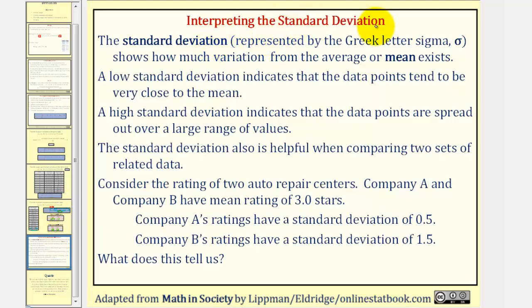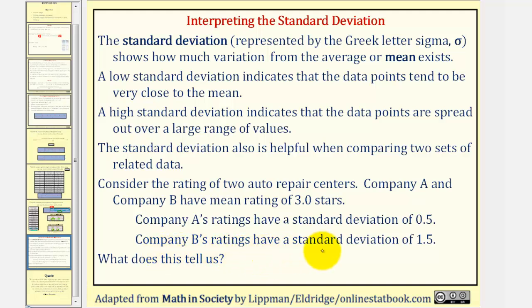Now let's interpret the standard deviation. The standard deviation, represented by the Greek letter sigma, shows how much variation from the mean exists. A low standard deviation indicates data values tend to be very close to the mean; a high standard deviation indicates data points are spread out over a large range. Standard deviation is also helpful when comparing two sets of related data. Consider two auto repair centers: Company A and Company B both have mean ratings of 3.0 stars, but Company A has a standard deviation of 0.5 while Company B has a standard deviation of 1.5. This tells us that Company B's ratings are more spread out from the mean of 3 stars than Company A's ratings.